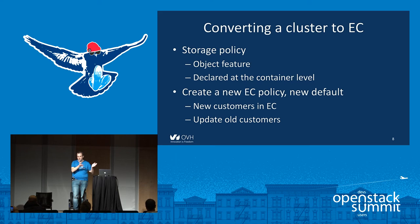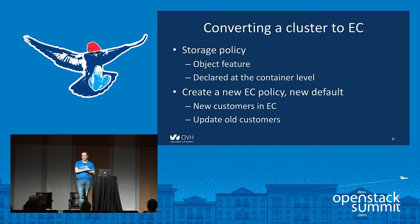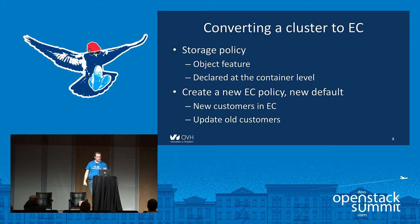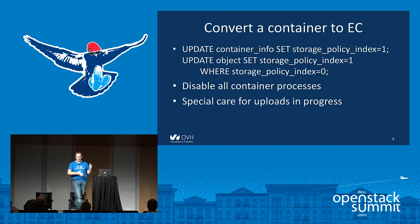Replica and erasure coding are just storage policies in Swift. A storage policy is an object feature, but it is declared at the container level. So when we convert an object from replica to erasure coding, we must keep this information in sync. The easy first step was just to declare the new erasure coding policy and set it as the default in Swift, so all new customers will automatically be in erasure coding. After that, we had to convert the whole existing customer base to erasure coding. Since the storage policy information is declared inside the container, we must update containers while converting the objects.